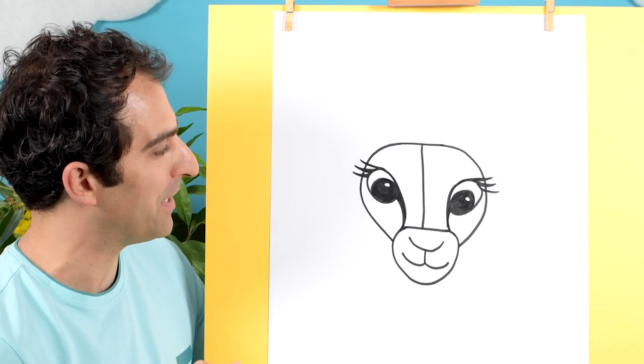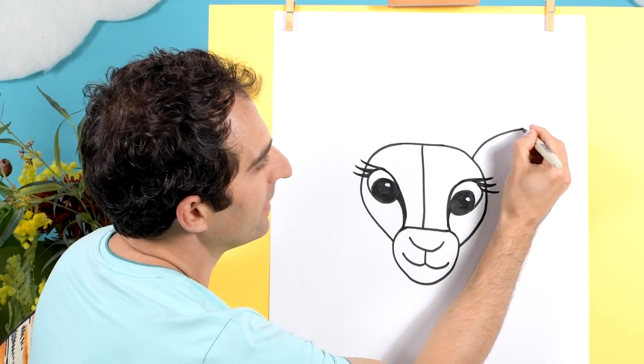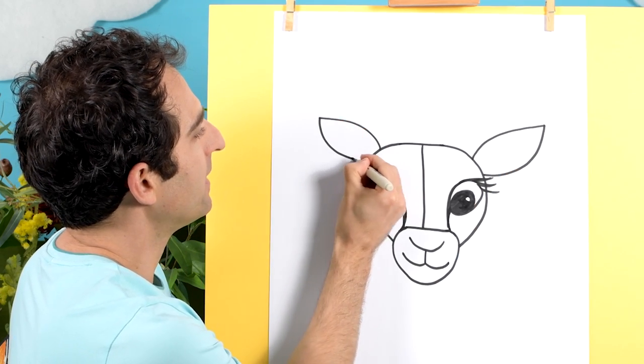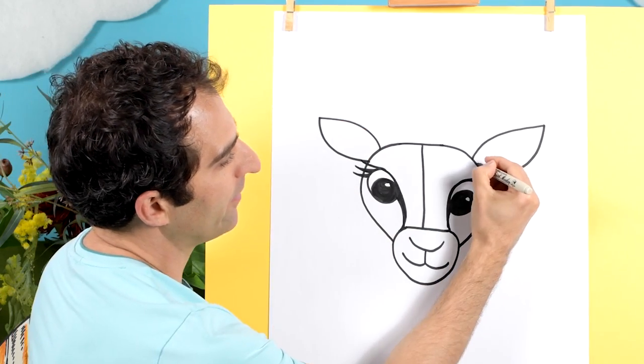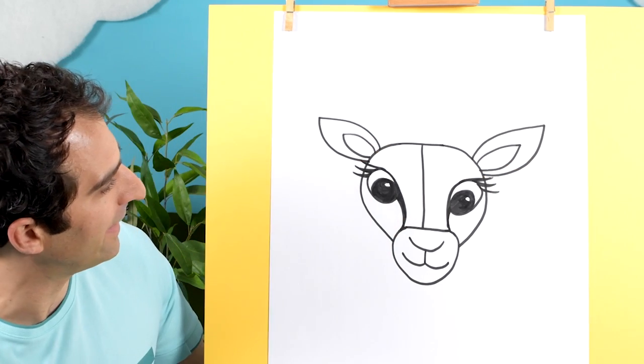Okay, now some big impala ears. So they will go like this out like that, and one over here as well. And then we can draw shape inside. Great.